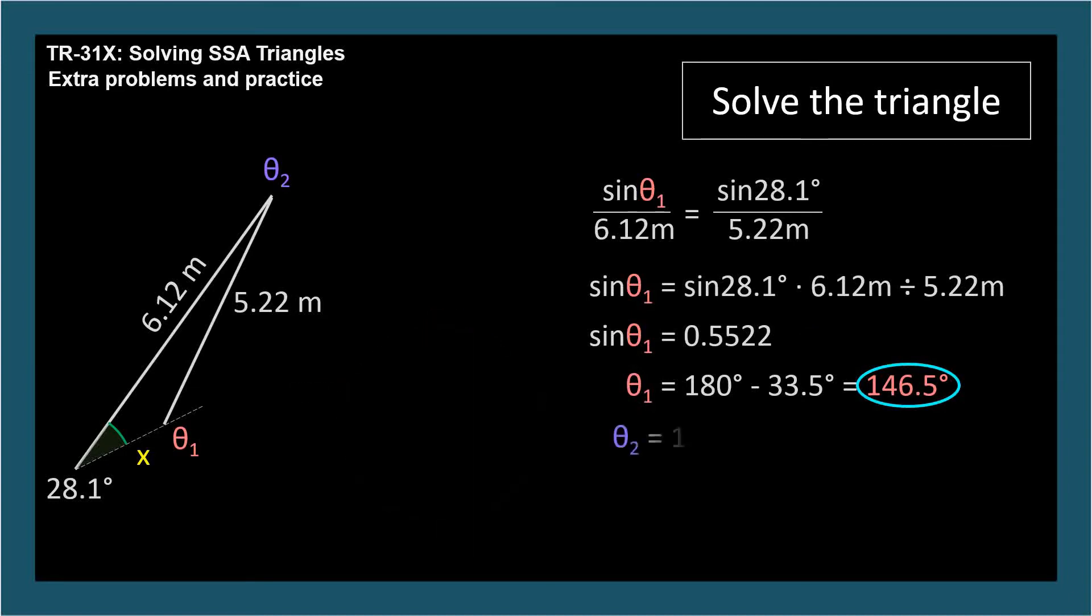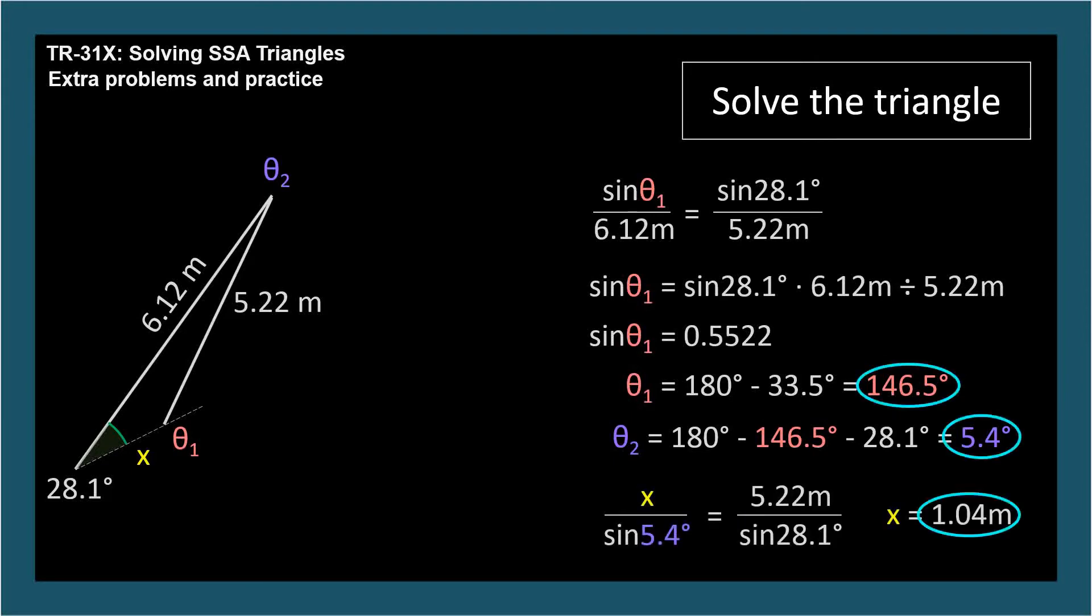Now we have two angles, so we subtract them from 180 degrees to find the third. It's 5.4 degrees. Now we use the law of sines to find x again, 1.04 meters, and we've found the second solution to this SSA triangle.